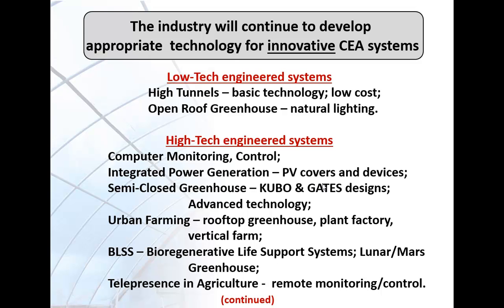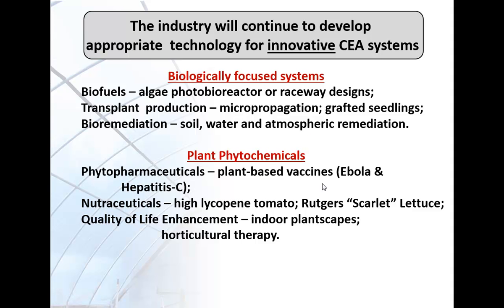Bioregenerative life support systems will provide lunar and Mars greenhouses offering not only food for astronauts and space travelers, but also oxygen and fresh water. Telepresence in agriculture will be the transfer of information from remote, monitored, and controlled systems, with the possibility of the operator not even being adjacent to the production system. Biologically focused systems include biofuel development with algae as a photo-bioreactor using artificial lighting, or open raceway systems using natural sunlight.